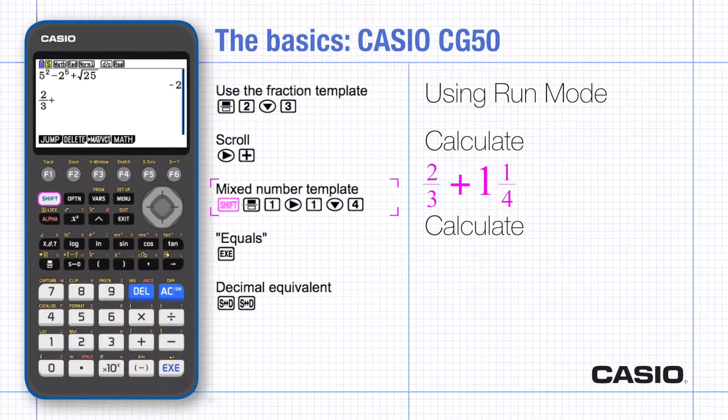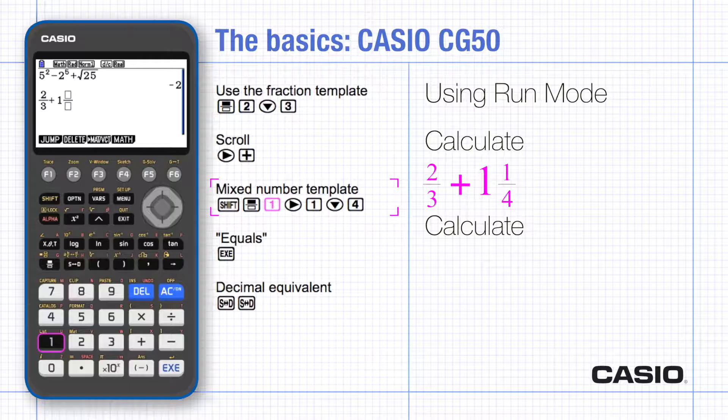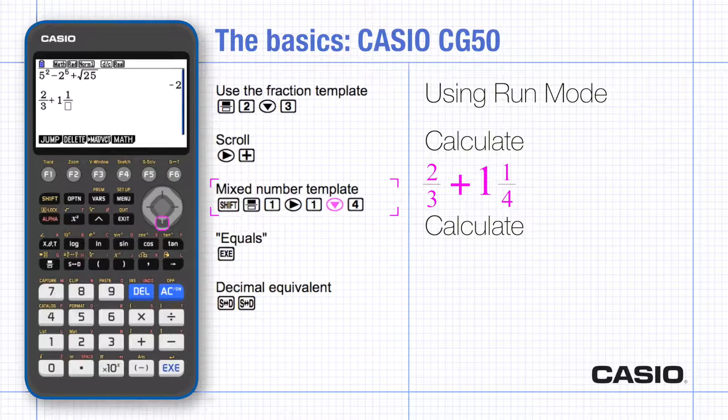Use the mixed number template for the one and a quarter. If you just put one in front of a fraction it will give you one times the fraction and not a mixed number. Press execute and the answer is displayed as a fraction.